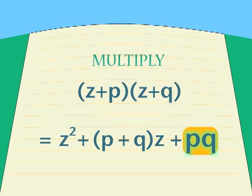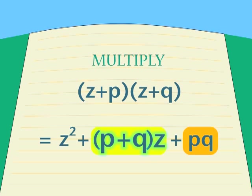Here, p and q are the final terms in the two expressions to be multiplied. And again, in our answer, we factor out z to reveal p plus q in the middle term, and p times q at the end.